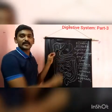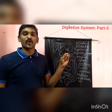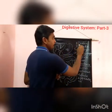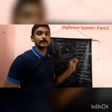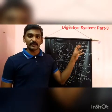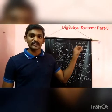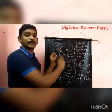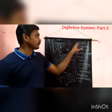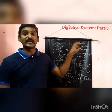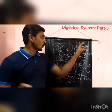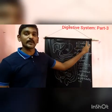The liver participates in the production of bile juice. Bile juice consists of bilirubin, biliverdin, bile pigments, bile salts, cholesterol, and phospholipids. Importantly, there are no enzymes in bile juice — only bilirubin, biliverdin, bile salts, cholesterol, and phospholipids.